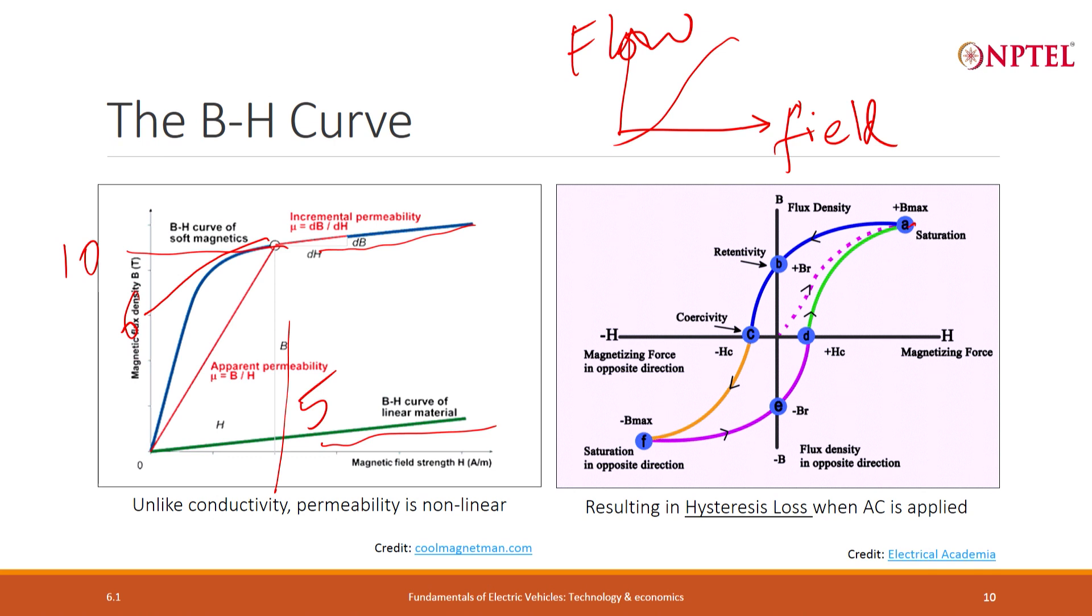In this B-H curve, when I am going from this point to this point, this is the path I am traveling by, and the area under that is the total energy associated with that path. Now when I come back from this point back to that point, I am not taking the same path, I am taking a different path. The energy associated with this path is different from the energy associated with the other path. So when I complete a full loop, there is a net difference of energy, and that is the hysteresis loss.